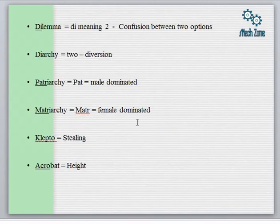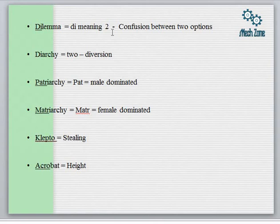Next we come to another important root word — 'di,' which simply means two. 'Dilemma' means we are confused between two options — a state of confusion, chaos, or pandemonium — when we are not able to decide or differentiate between two options, and cannot choose which option to take and which to drop. Dilemma simply means being unable to decide between two given choices.